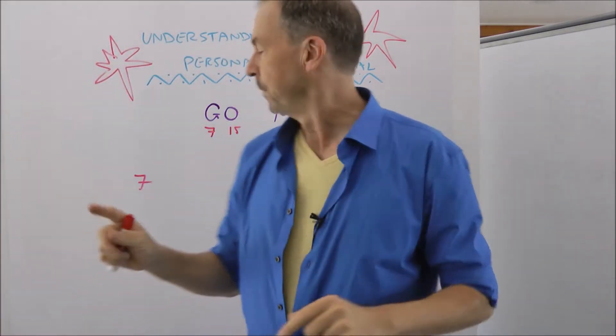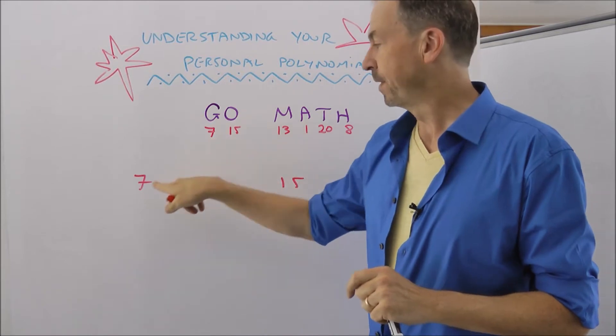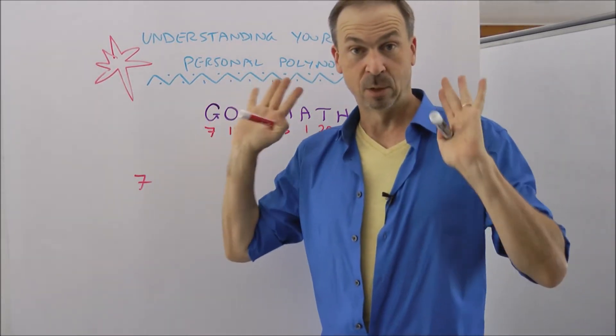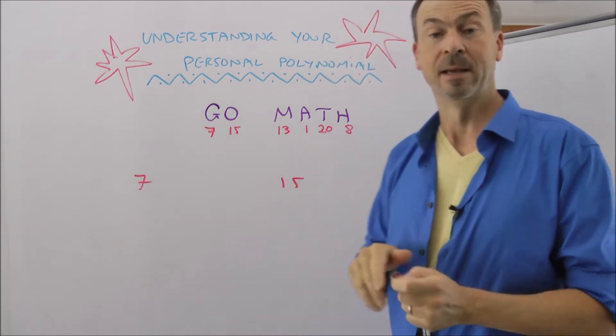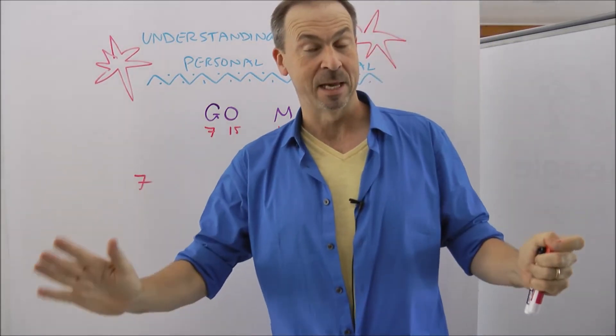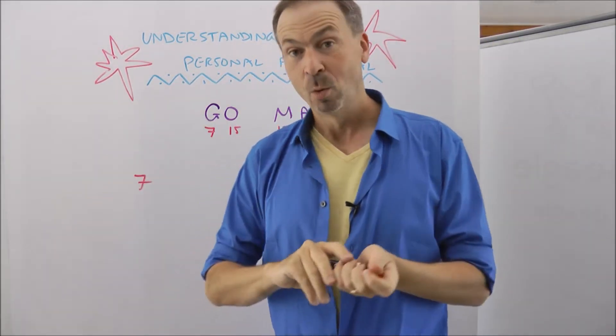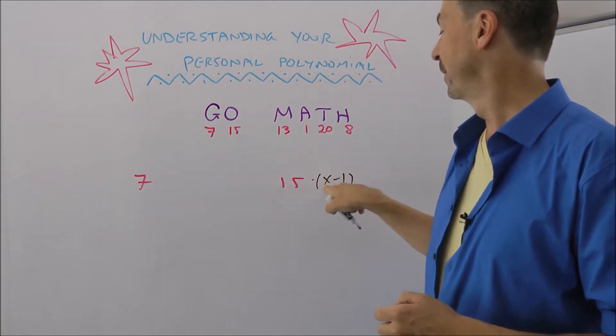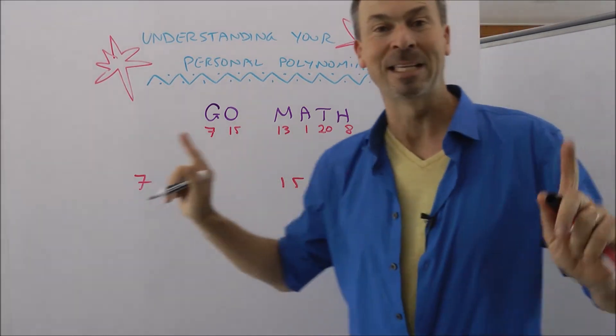Alright, let's think through what needs to happen here. When x equals 1, I want the 7 piece to survive, but I want the 15 piece to go away. So when x is 1, I want this part to disappear. How can I make a piece of a formula disappear for x equals 1? Well, one way to do it is to put in a factor of x minus 1. When x is 1, I get 15 times 1 minus 1, 15 times 0. Indeed, that piece will go away.